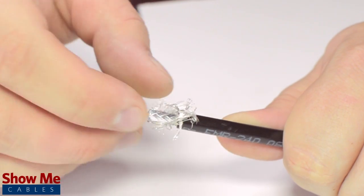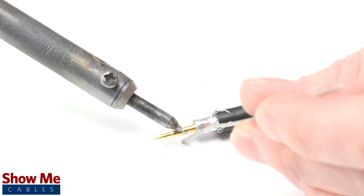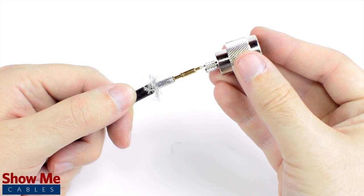Pull back the braided shield and insert the pin onto the center conductor. Solder the pin onto the center conductor and insert the connector housing over the cable.